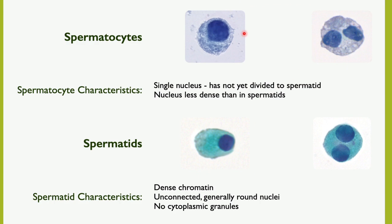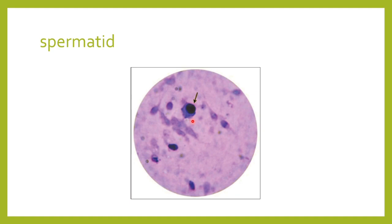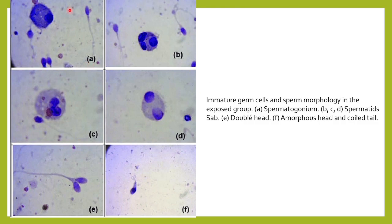These are the spermatocytes you can see here — they have a single nucleus and have not yet divided. Here you can see the spermatids; they have a little dense chromatin and no granules in the cytoplasm. Here you can see a primary spermatocyte with abundant cytoplasm and a large nucleus. Here is a spermatid with condensed nuclei and abundant cytoplasm with no cytoplasmic granules. Here is a spermatogonium, and B, C, D are spermatids. This is a double-headed sperm and this one has a coiled tail spermatozoa.